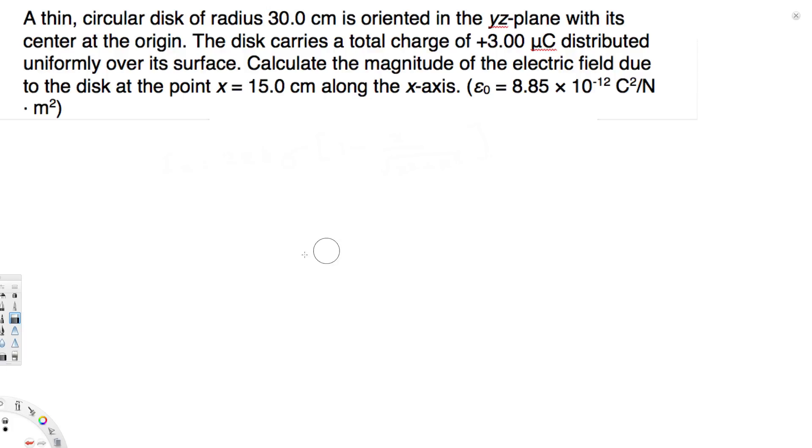Hey, what's going on guys? Let's try this problem. This question asks: A thin circular disk of radius 30 centimeters is oriented in the yz-plane with its center at the origin. The disk carries a total charge of 3 microcoulombs distributed uniformly over its surface. Calculate the magnitude of the electric field due to the disk at the point x = 15 centimeters along the x-axis.